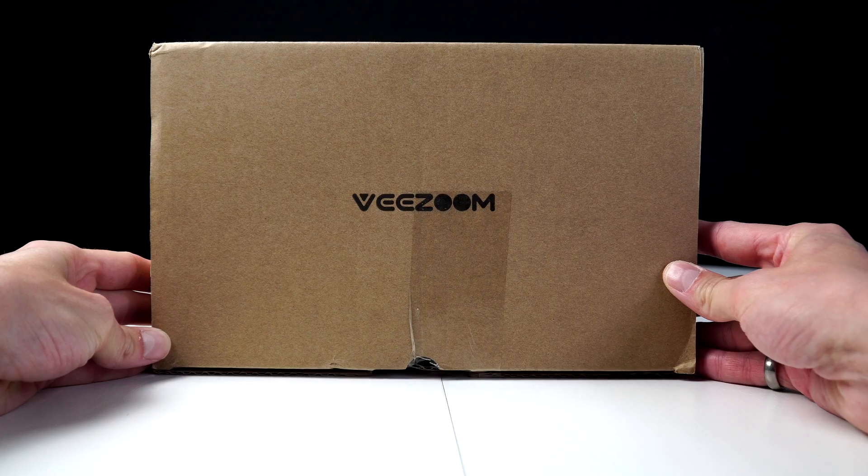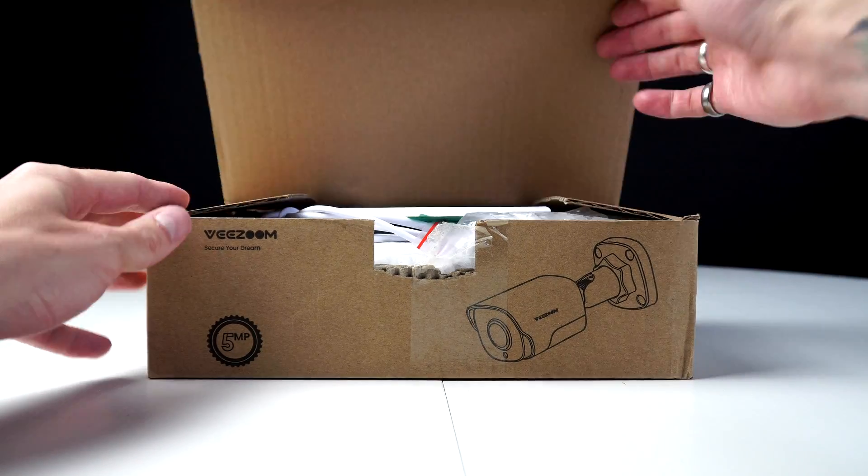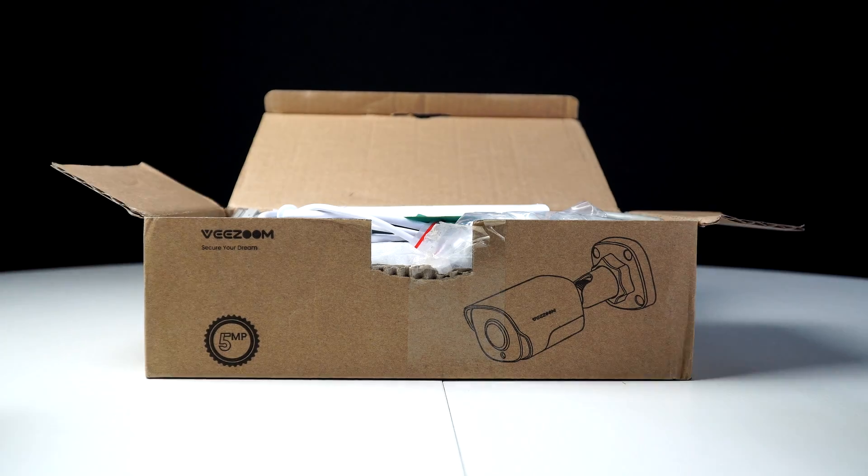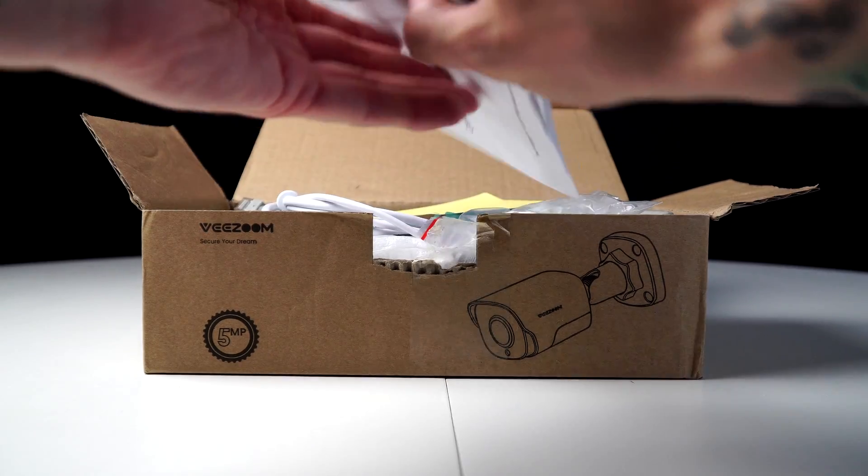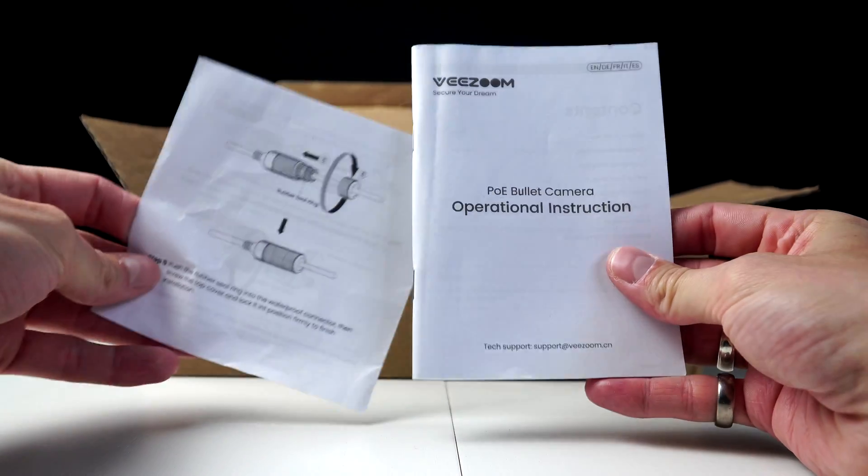We're looking at the VZoom 5 megapixel POE security cameras, which you can mount indoor or outdoor. We're going to set up one camera, then two cameras, and then we'll set up four cameras.